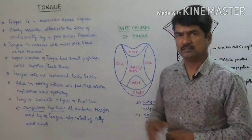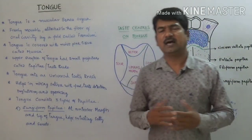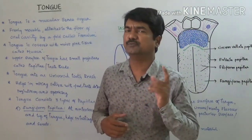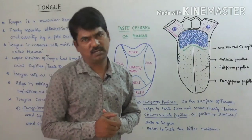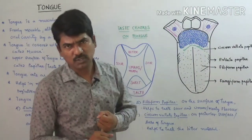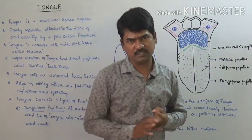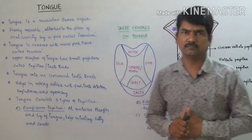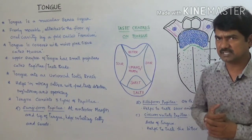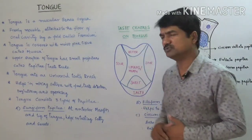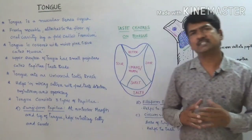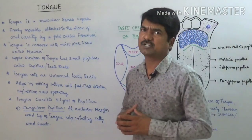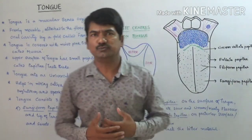As explained in the previous classes, the alimentary canal is associated with many structures from the mouth onward. We discussed about the mouth, oral cavity or buccal cavity. Inside the buccal cavity, teeth and tongue are also present. Teeth were explained in the previous classes. Now we are going to explain about the tongue and its importance in the digestion of food. Tongue is very important for the partial digestion of food in the mouth.